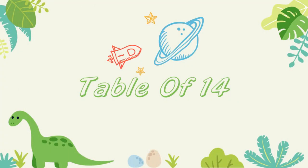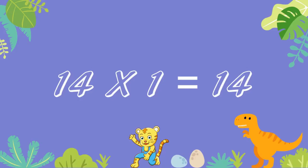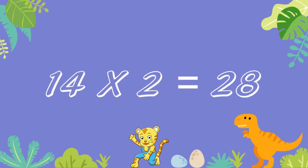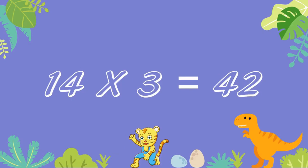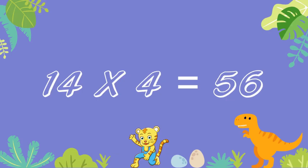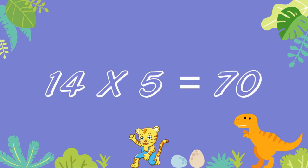Table of 14. 14 ones are 14. 14 twos are 28. 14 threes are 42. 14 fours are 56. 14 fives are 70.